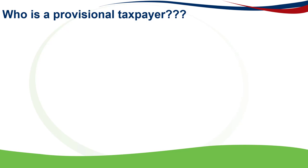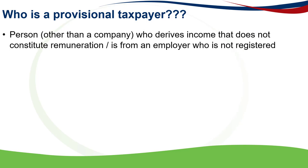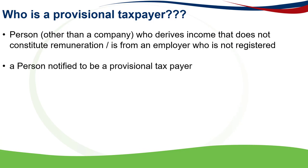Now who is a provisional taxpayer? This is any person other than a company who derives income that does not constitute remuneration, or is from an employer who is not registered as such. Secondly, it is any person that is notified to be a provisional taxpayer by the commissioner, and it excludes a natural person who does not derive income from carrying on of a business.